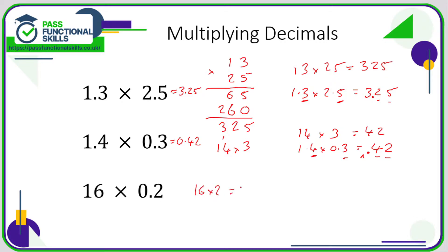16 times 0.2. Let's just do 16 times 2, which is 32. So if 16 times 2 is 32, then 16 times 0.2... we have one decimal place, so we need one decimal place in our answer. If I put the decimal point between the 3 and the 2, I've got one decimal place, so the answer is 3.2.